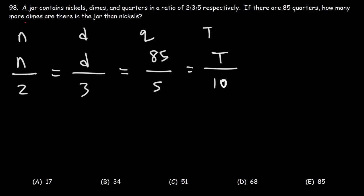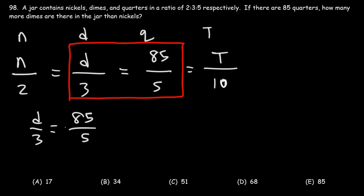Now, we need to know how many more dimes are there in the jar than nickels, so we need to solve for n and d. Let's begin by solving for d. Let's set these two fractions equal to each other. So we have d over 3 is equal to 85 over 5. Now let's cross multiply.